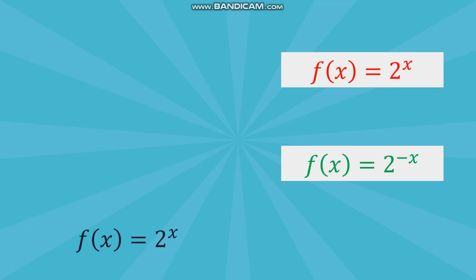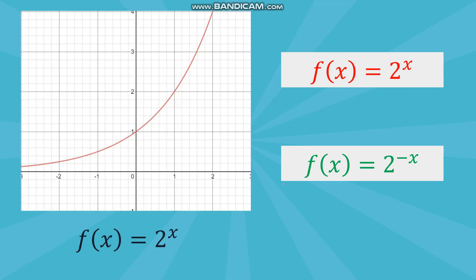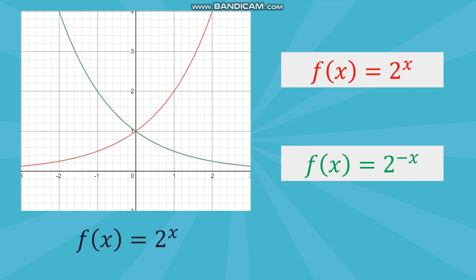For example, f(x) = 2 raised to x and f(x) = 2 raised to negative x have the same base and exponent but opposite signs. Graphing both functions, you can see that one is the mirror image of the other. This reflection occurs along the y-axis and happens when the functions share the same base and exponent but differ only in the sign of the variable.